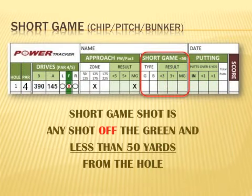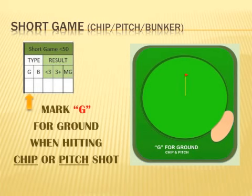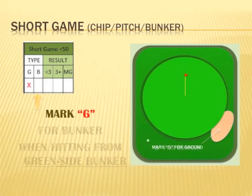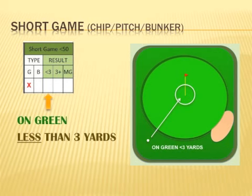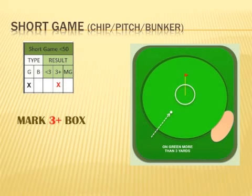Now we will track our short game shot, which is any shot less than 50 yards from the hole. First we mark the type of shot we are playing. If the ball is on the ground and you are hitting a chip or a pitch shot, mark G for ground. When hitting from a green side bunker, mark the B box for bunker. Since we are off the green hitting a chip shot, we mark the G box. Next we record the result of the chip shot: on the green less than 3 yards from the hole, on the green more than 3 yards, or miss the green. We hit our chip shot about 8 yards from the hole, so we mark the 3-plus box.